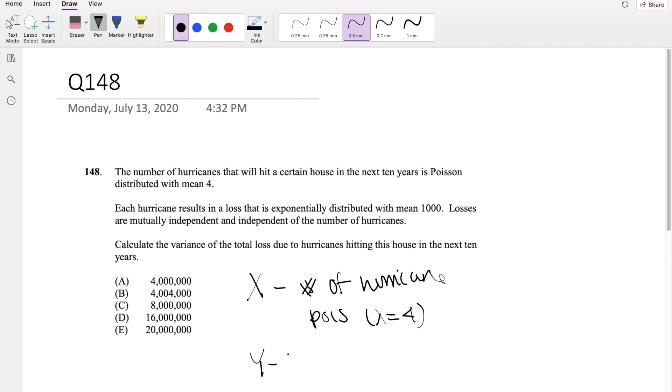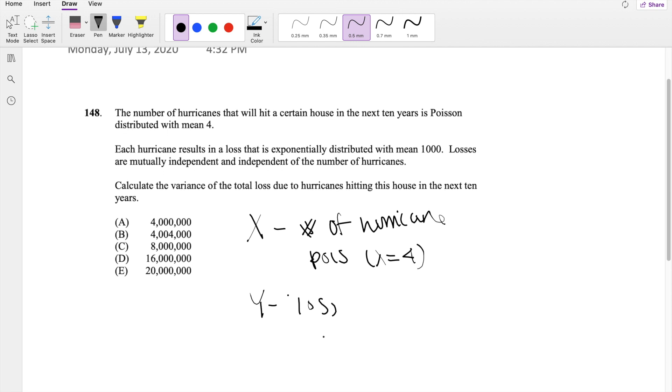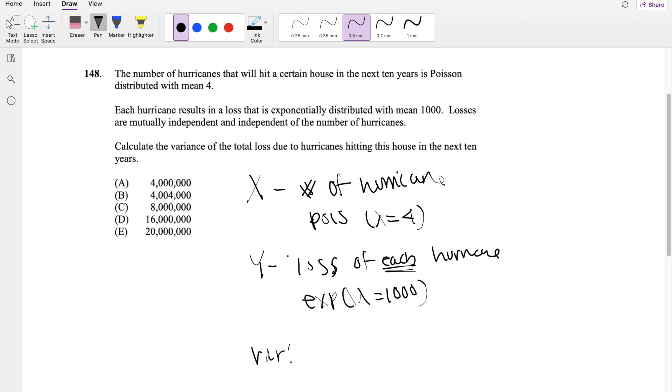Then I'm going to denote Y to be the loss that is exponentially distributed with mean equal to 1000. So this is actually the loss of each hurricane. And we're asked to find the variance of total loss. And we know the total loss by the law of total variance is equal to the variance of expectation of T given X plus the expectation of variance of total losses given X.